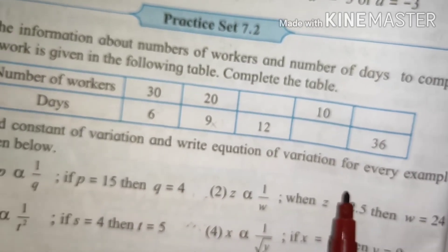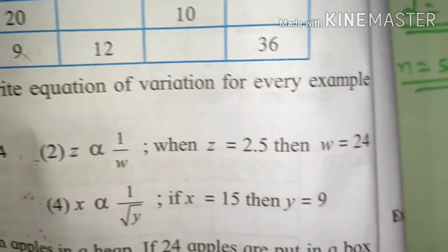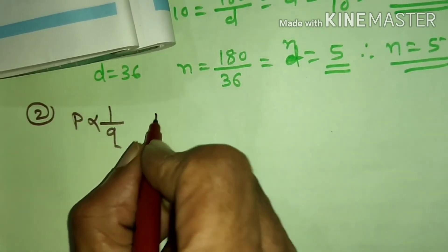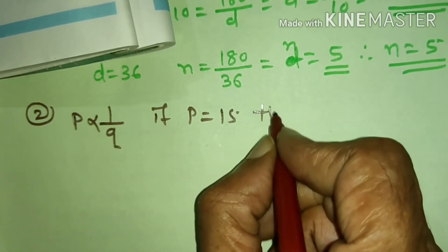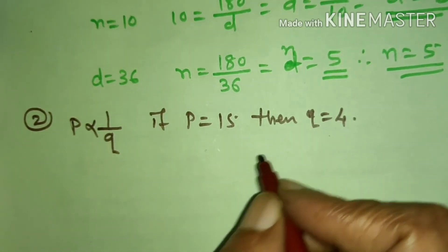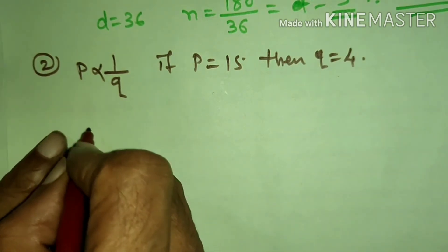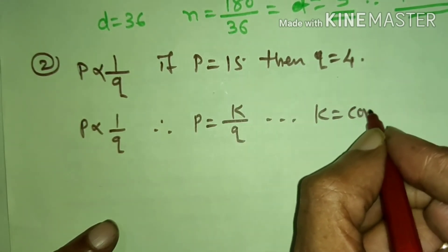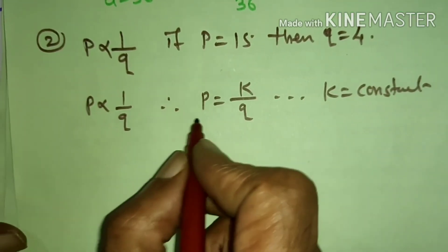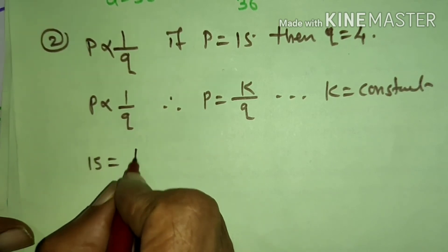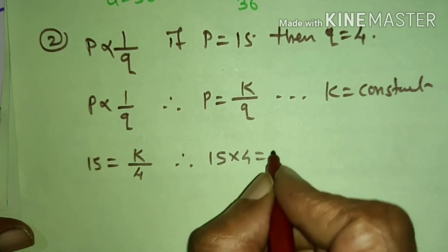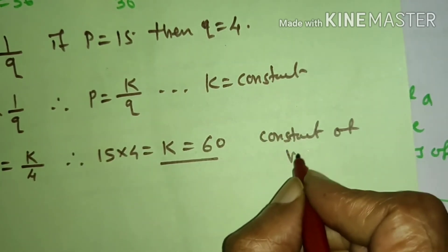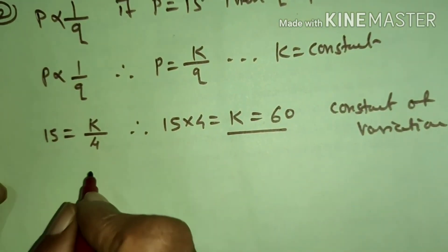Next, Question 2: Find the constant of variation and write the equation of variation for every example. First: P varies as 1 upon Q — that is, P varies inversely as Q. If P is equal to 15, then Q is equal to 4. Since P varies as 1 upon Q, therefore P is equal to K upon Q, where K is constant. Substituting: 15 is equal to K upon 4, therefore K is equal to 15 into 4, that is K is equal to 60. This is the constant of variation.